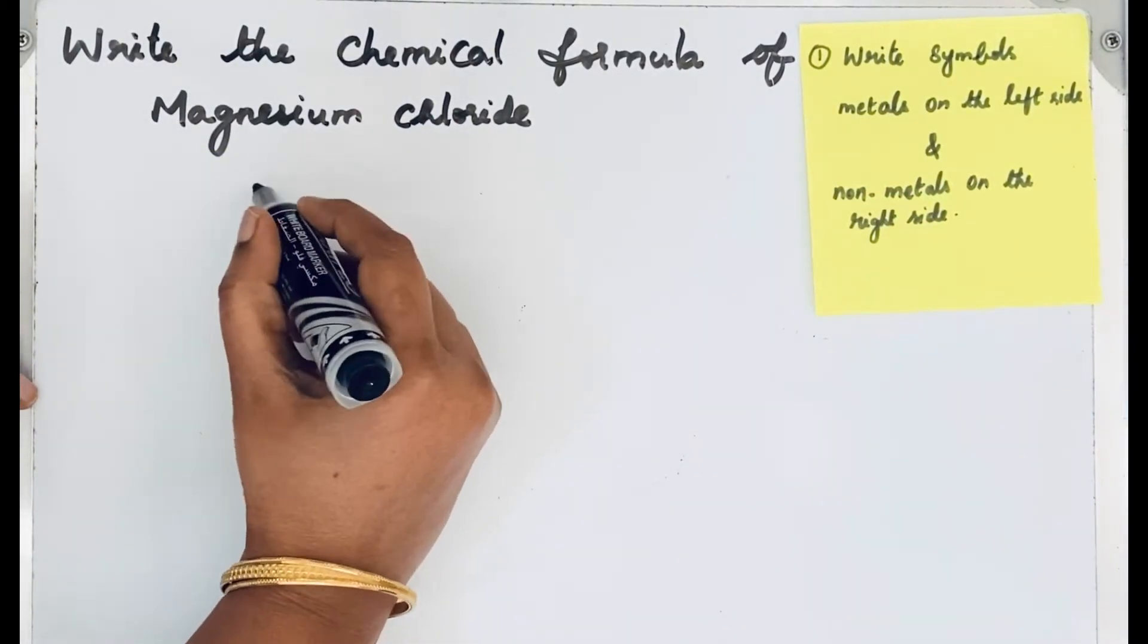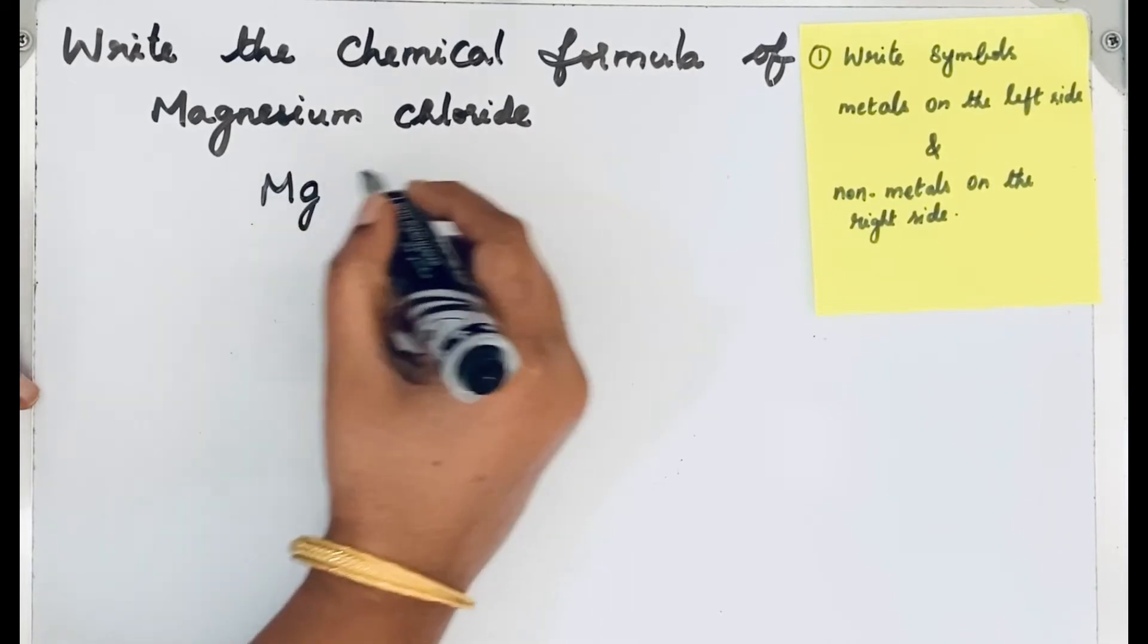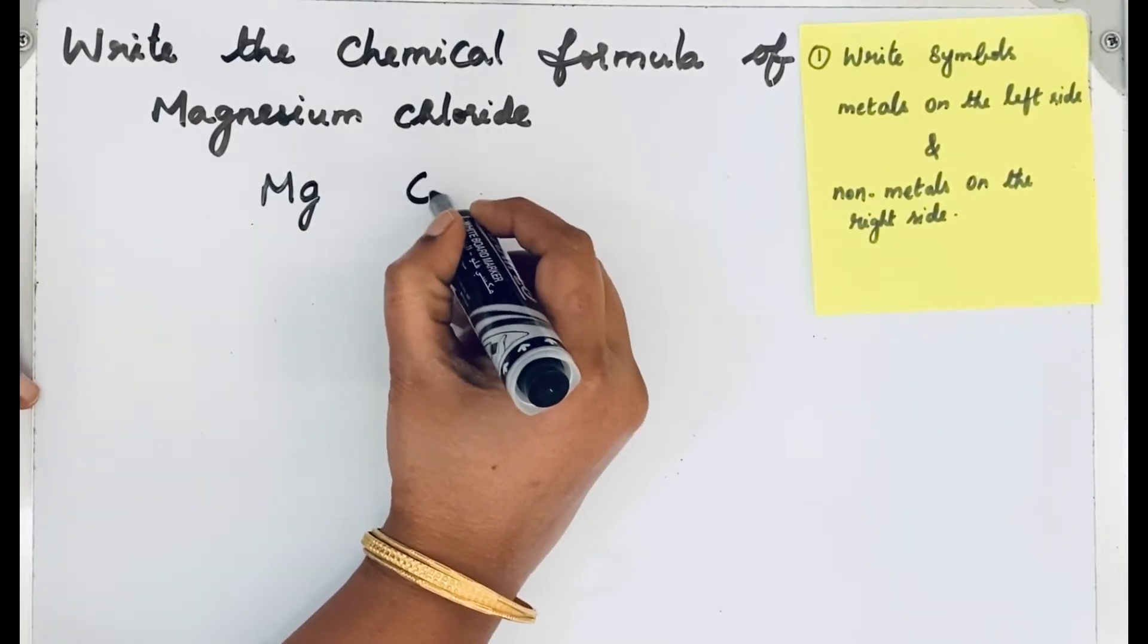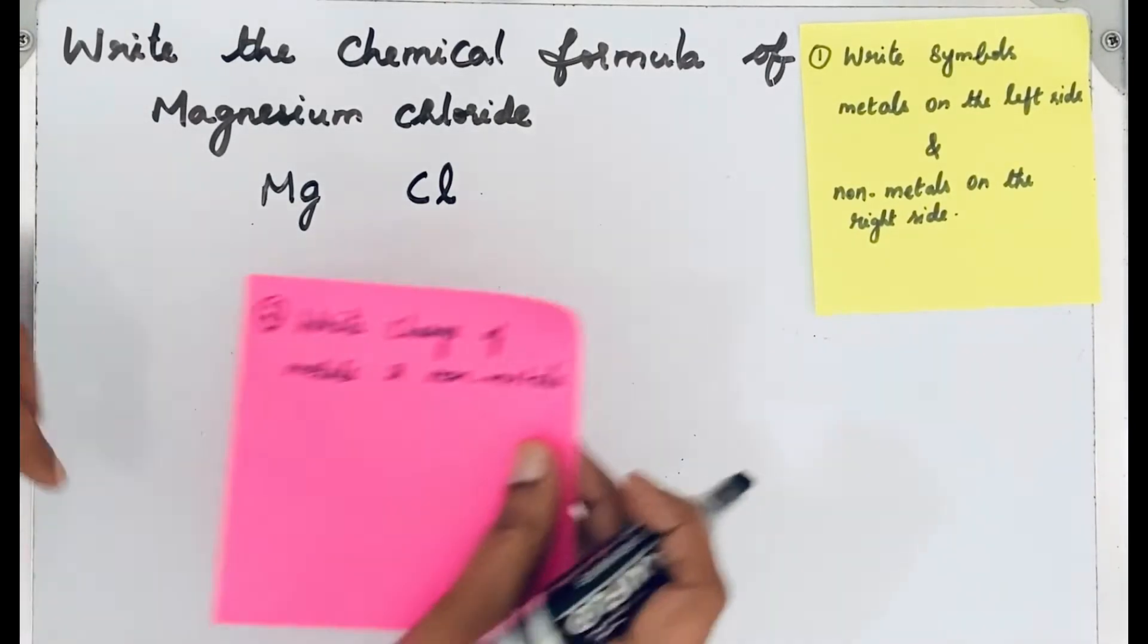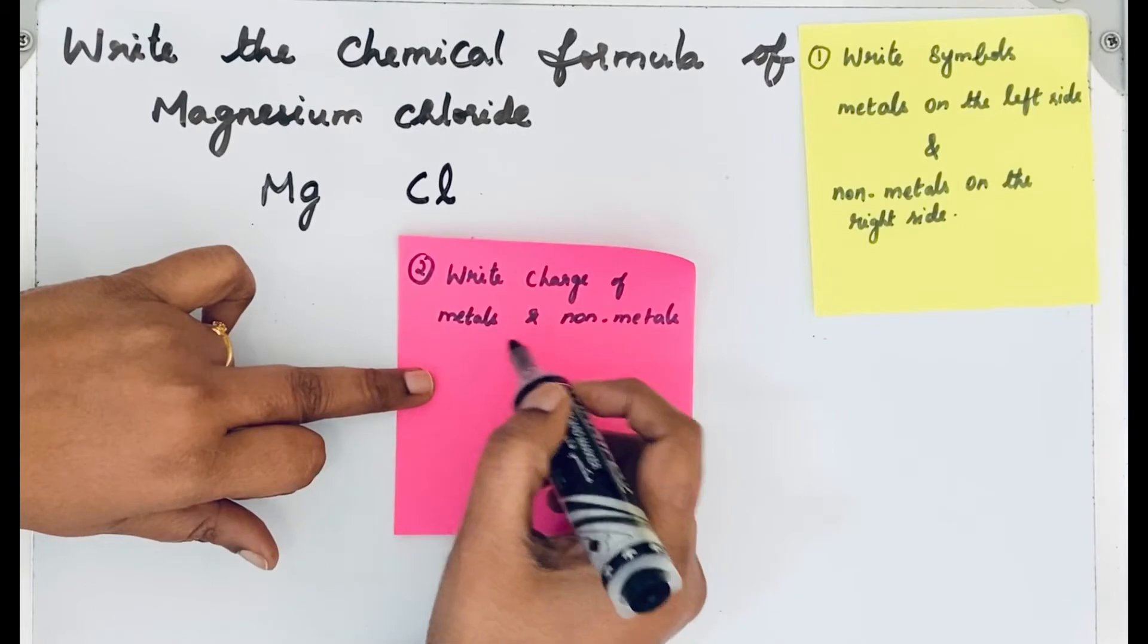Let's write magnesium as Mg and for chloride ions, Cl. After writing the symbols, the next thing is write charge of metals and non-metals.